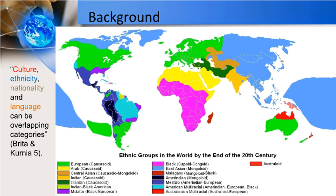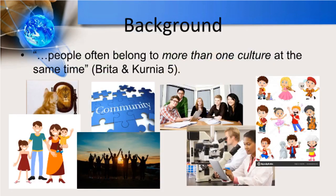Therefore, we need to use these terms carefully in order to avoid misunderstanding. In essence, Britta and Kurnia also emphasize that people often belong to more than one culture at the same time. It means that people have different roles in society, and within each role, there ought to be a certain culture.